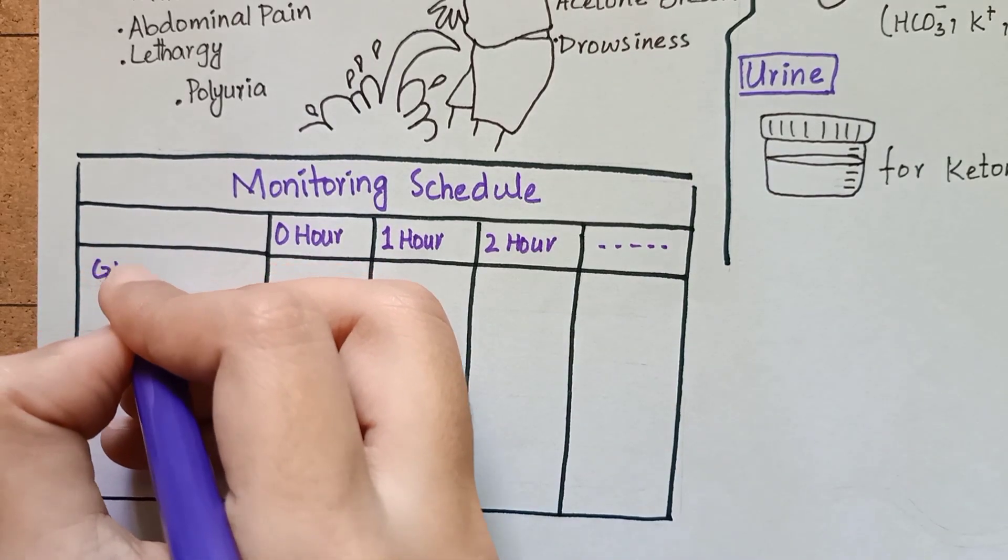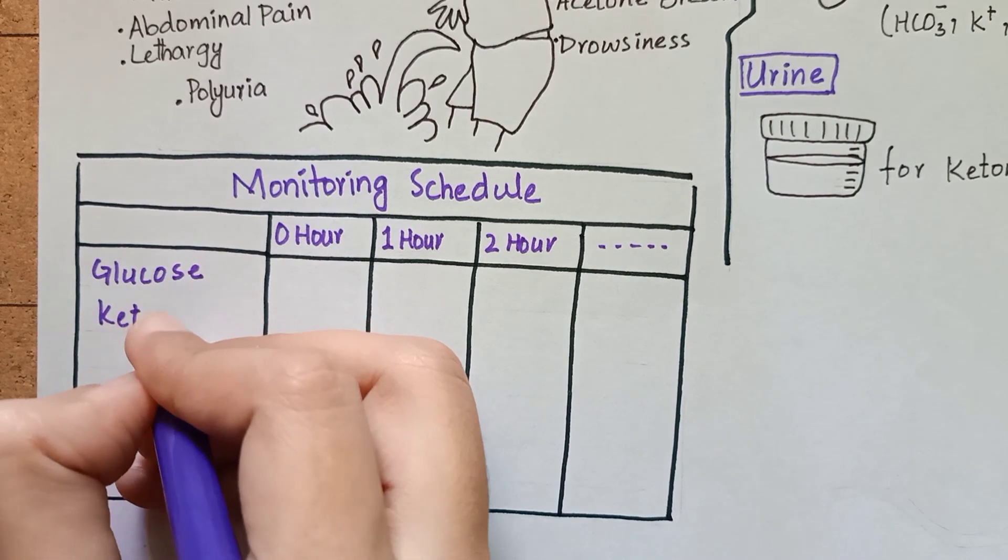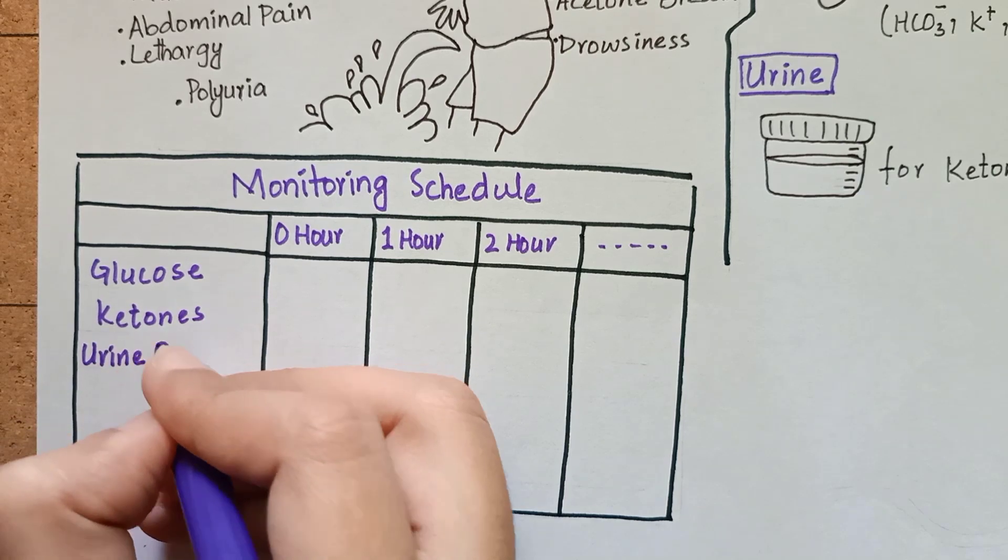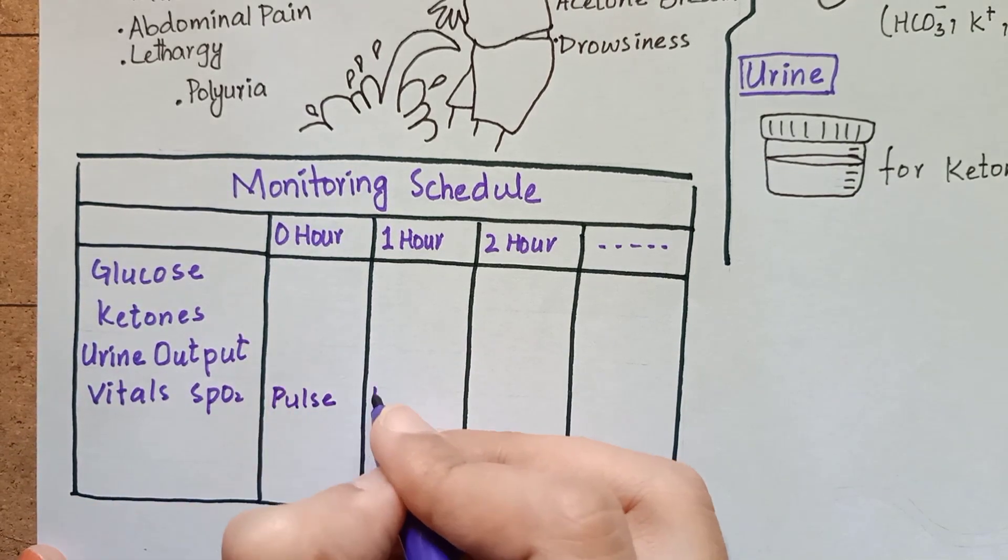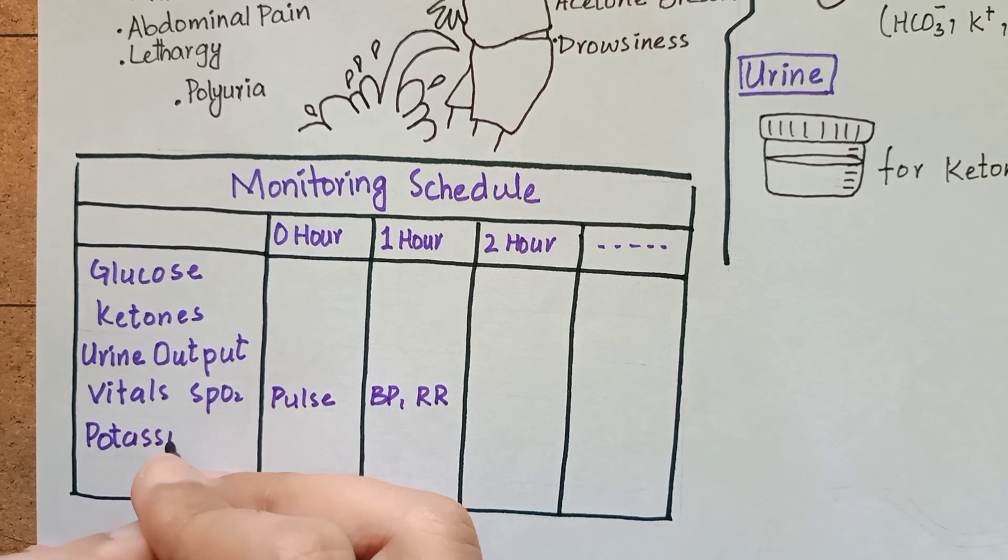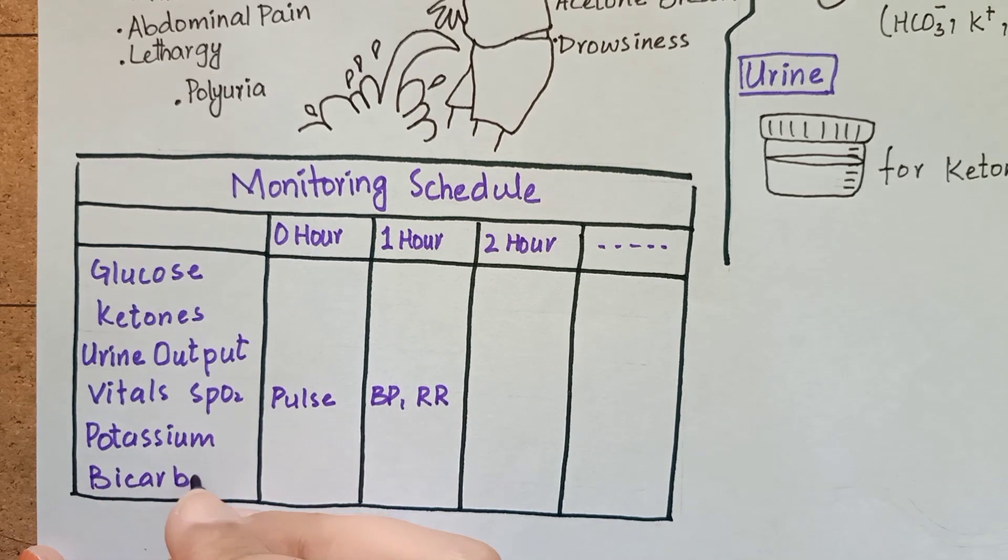Hourly monitoring will mainly focus on the parameters of blood glucose, ketone testing, urine output. Along with these, you will also do clinical monitoring of vitals and there will be investigation of venous bicarbonates and potassium.